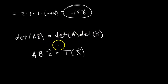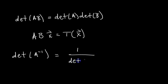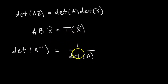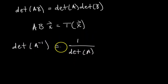Another property: the determinant of A inverse equals one over the determinant of A — det(A⁻¹) = 1/det(A). This is like bringing the negative one exponent outside. Intuitively, if A scales area by det(A), then the inverse transformation that undoes A scales area by 1/det(A), which is one over the original scaling factor.